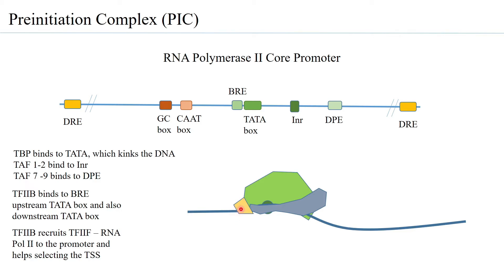The next transcription factor is TF2A, which may or may not be present. TF2A has two domains able to bind just upstream of TF2B, interacting with TF2D, TF2B, and the double helix DNA. The binding of TF2A is primarily for stabilizing the existing TF2D–DNA–TF2B complex rather than playing any other major role.